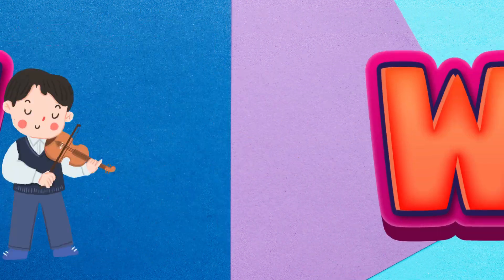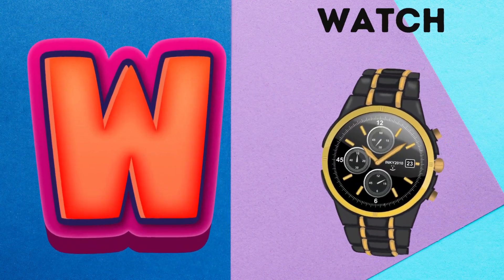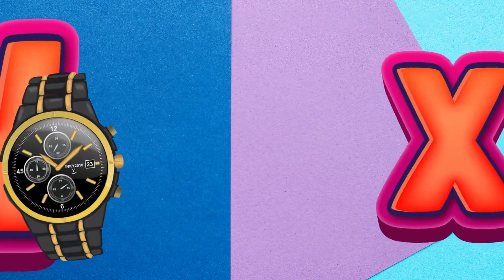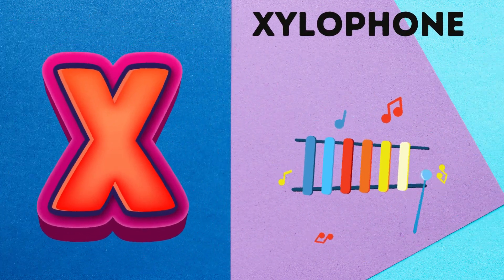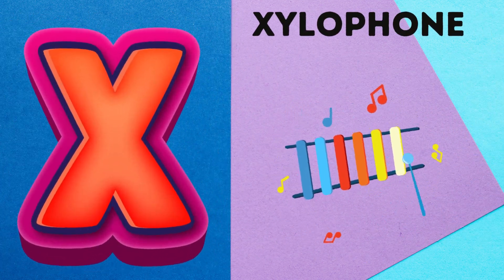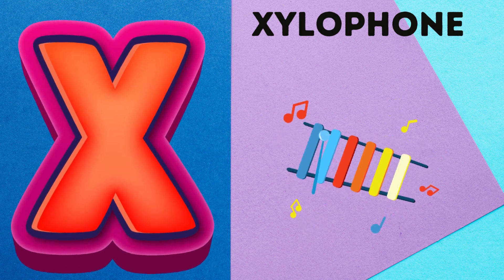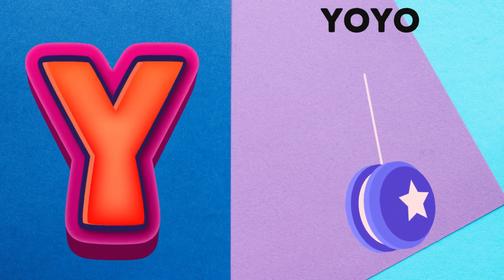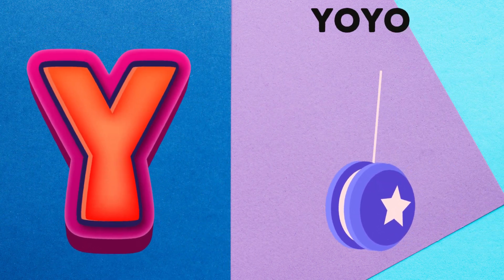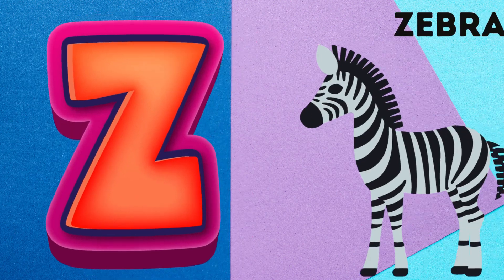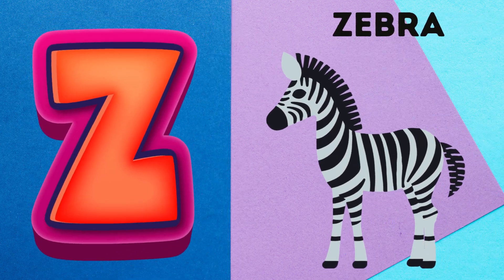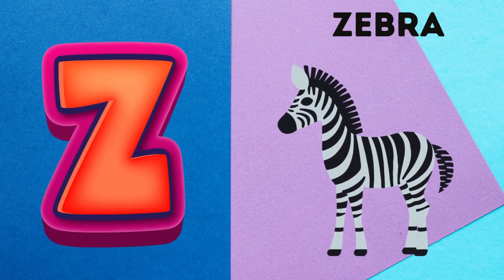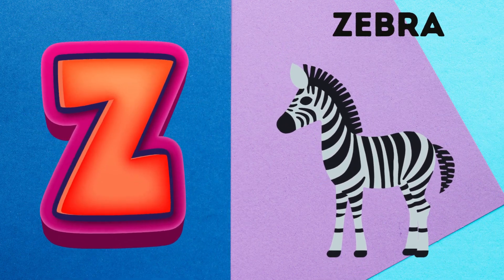V is for Violin. V. Violin. W is for Watch. V. Watch. X is for Xylophone. Z. Xylophone. Y is for Yak. Ya. Z is for Zebra. Z. Zebra.